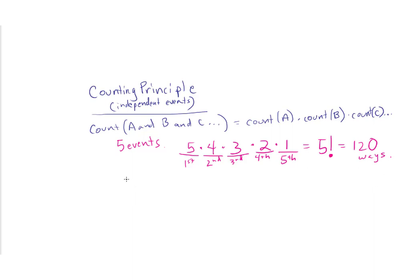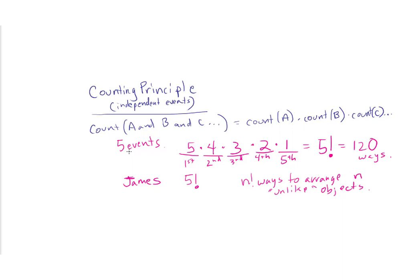Let's try another example — the name JAMES, five different letters. My first selection is from 5 letters, second from 4, and so on — it's without replacement. There'll be 5 factorial ways to arrange 5 unlike objects. In general, there are n factorial ways to arrange n unlike objects without replacement. But what if I had the name ABBA? Here we have repeats: two A's and two B's. Following the same pattern, if they were unlike it'd be 4 factorial. But I divide by 2 factorial for the repeating A's and 2 factorial for the repeating B's.